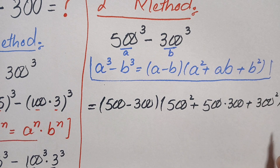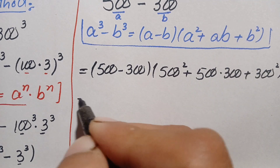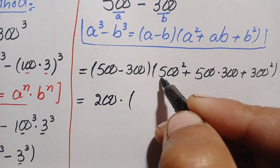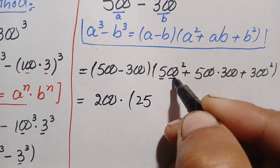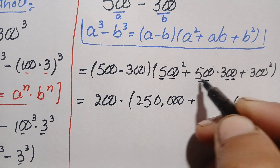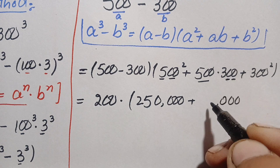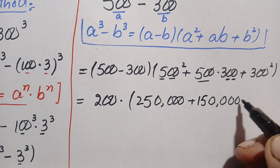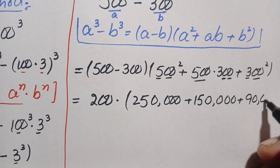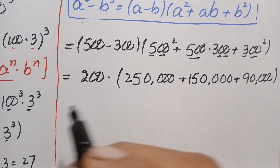Now we find the value of each term. 500 minus 300 equals 200. For 500 squared: 5 squared is 25 with four zeros, giving 250,000. For 500×300: this gives 150,000. For 300 squared: 3 squared is 9 with four zeros, giving 90,000.